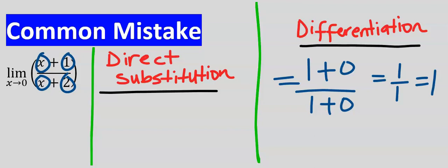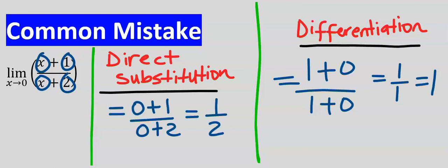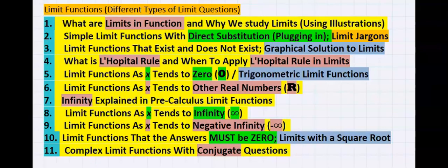You got one because you avoided the first step, which is direct substitution. By direct substitution — which is the first step — you get one over two, which is correct. By avoiding direct substitution and rushing into L'Hôpital's rule, you got one, and that is wrong.